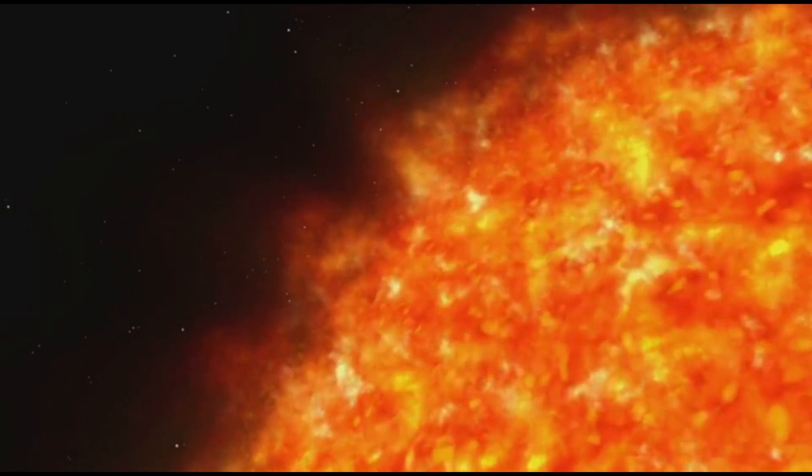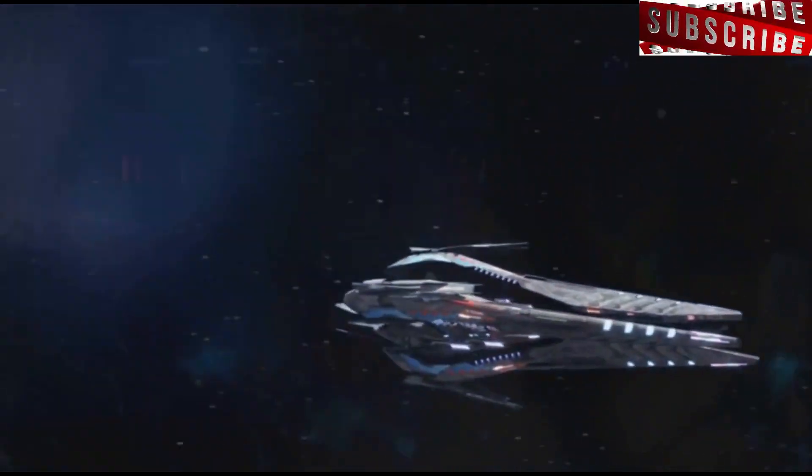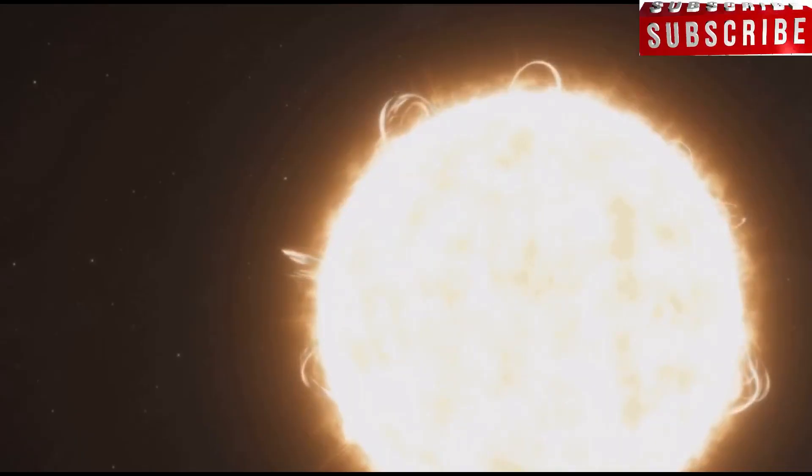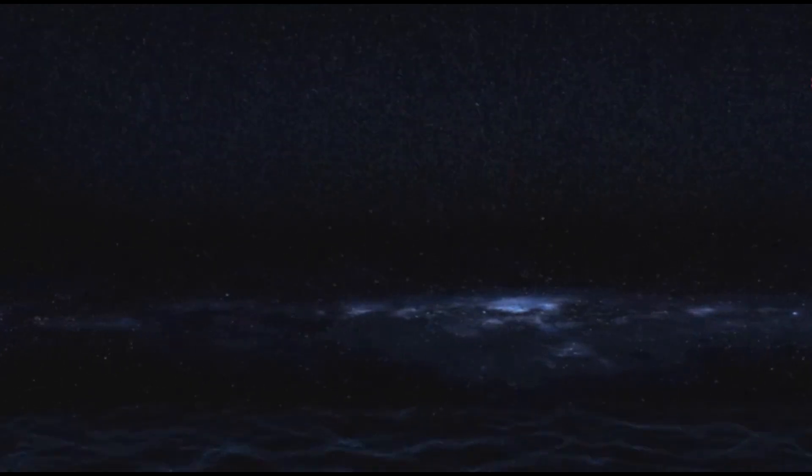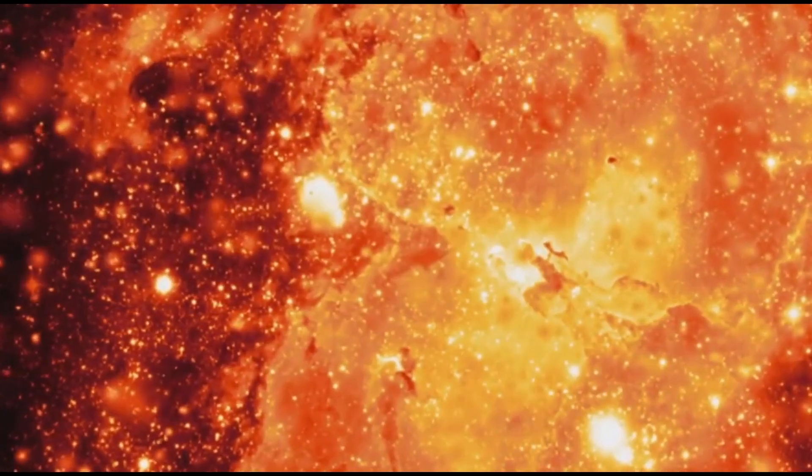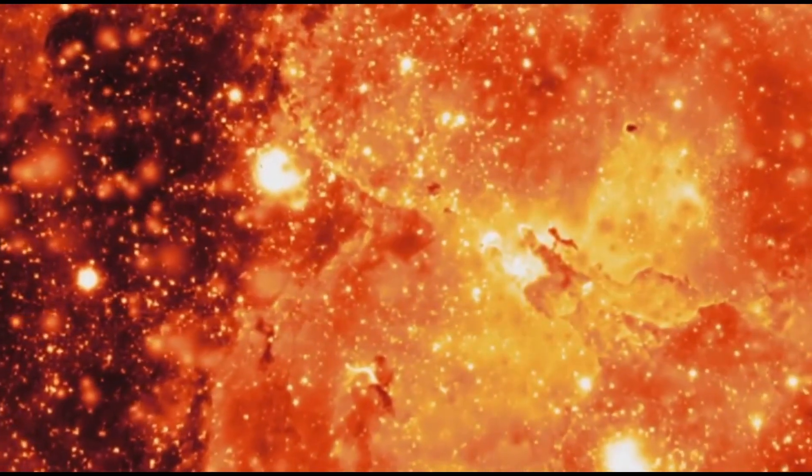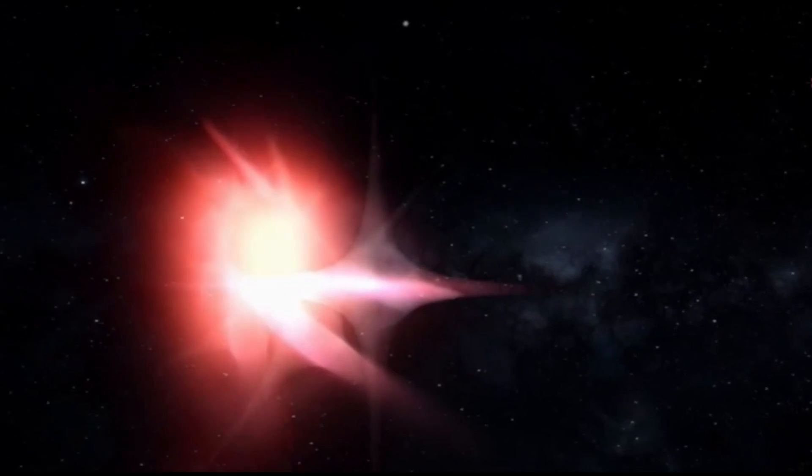UY Scuti A is primarily composed of hydrogen and helium, the two most abundant elements in the universe. These elements are the building blocks of stars, the fuel that powers their nuclear furnaces. Inside the core of UY Scuti A, hydrogen atoms are constantly fusing together to form helium, releasing tremendous amounts of energy in the process. This nuclear fusion is what makes stars shine, illuminating the cosmos with their brilliant light.